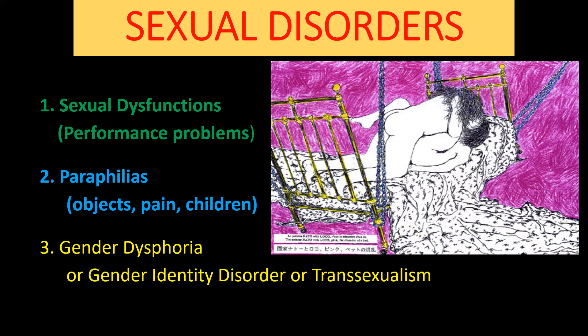The third category is a controversial one, called gender dysphoria — previously called gender identity disorder, and sometimes in adults called transsexualism. This means a person is unhappy with their gender. Gender is your mental way of thinking about yourself as male or female. A person might say, 'I know I look like a man, but in my mind I'm a woman, and I don't like this contradiction.' This is called gender dysphoria — the person is unhappy with their gender being different from their biological sex.